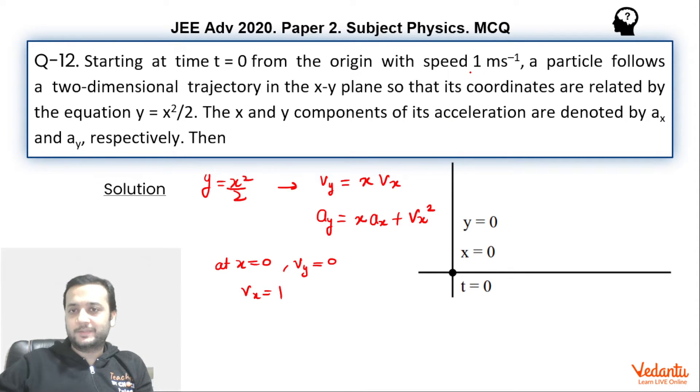Why vx will become 1? Because total speed has been given 1 meter per second. So vy equals to 0, so that means vx will become 1. Hence, ay value becomes, if at origin ay becomes 1 because vx is 1 and at origin x is 0.